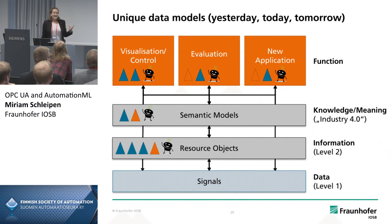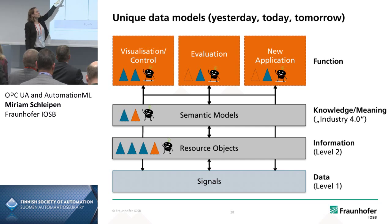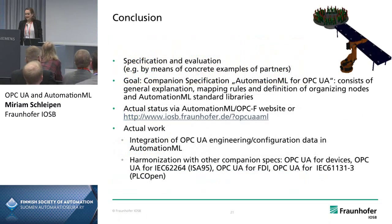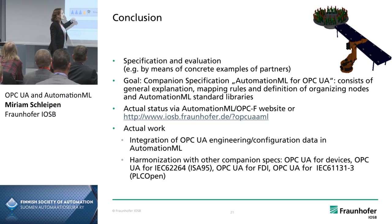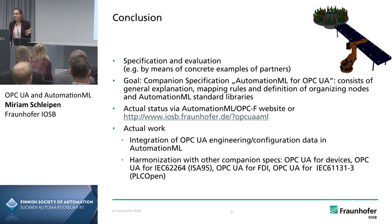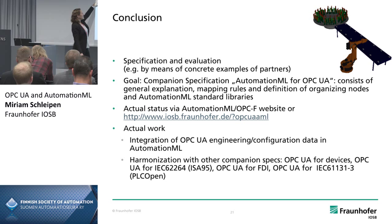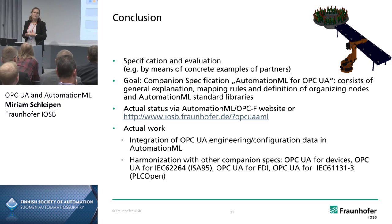In the past, you had signals coming from devices connected to different applications — for example, visualization tools, evaluation or analysis tools. Then with OPC, you grouped the signals, so you had information instead of pure data. Now, as we talk about Industry 4.0, semantic models are really one important thing. The knowledge and meaning of the information is directly coupled with the signals. This is what OPC UA brings with its information models, which is why OPC UA was also named in the application strategy for Industry 4.0.